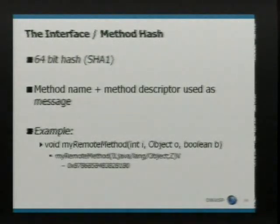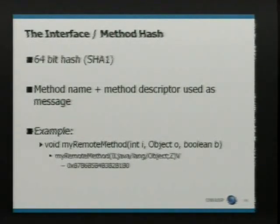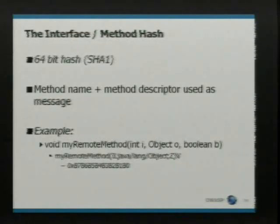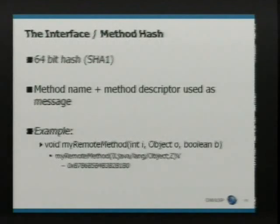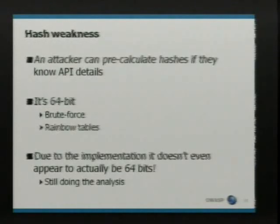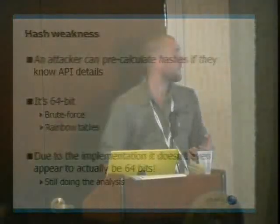The SHA hash is actually generated using a method name and method descriptor. The method descriptor is passed in, a SHA-1 hash is generated, and there's no seed. So you can actually generate these hashes based on people's API documentation. If you know certain methods residing on the server, you can generate the hashes — you know the keys. This is all about the hash weakness: the fact that you can pre-calculate hashes. If you get hold of someone's API documentation, you can start building these keys, and they're going to give you access to talk to the RMI service.